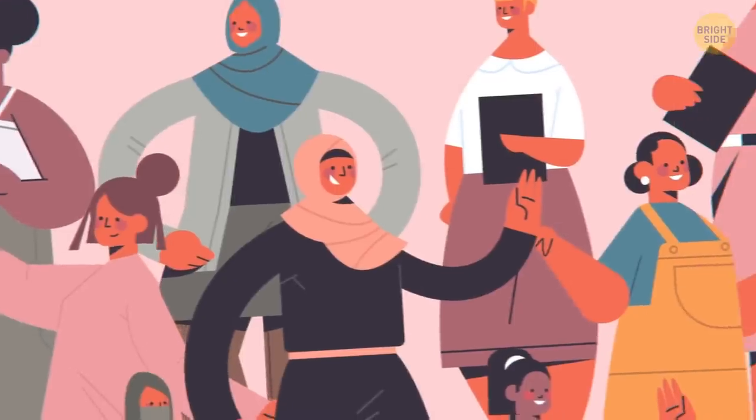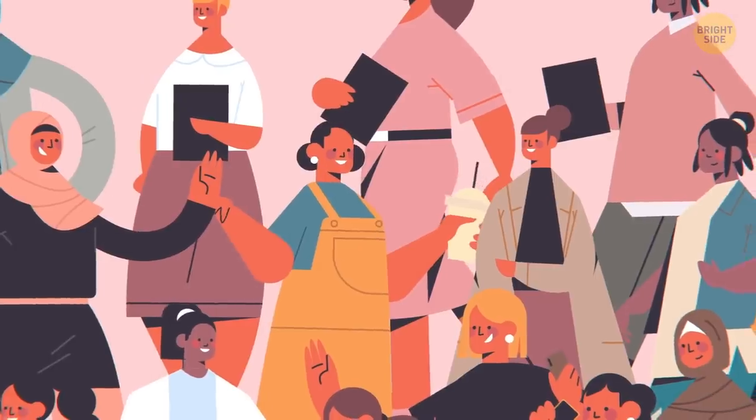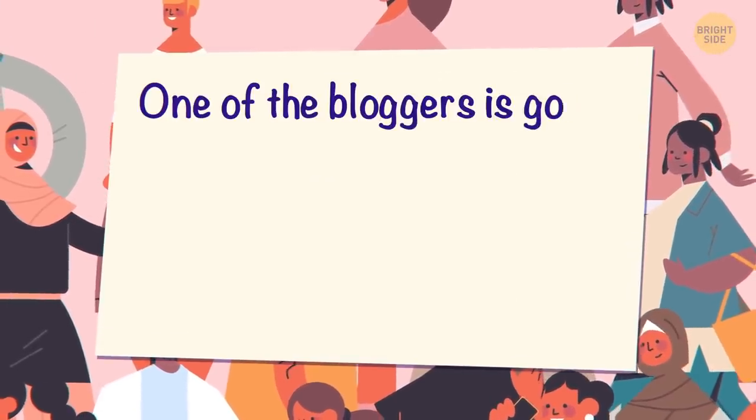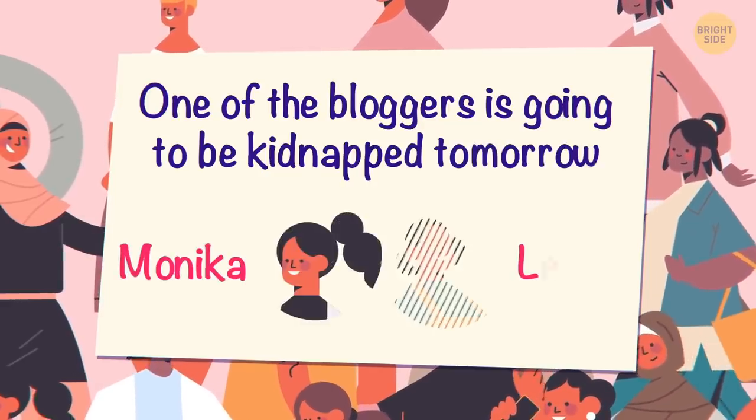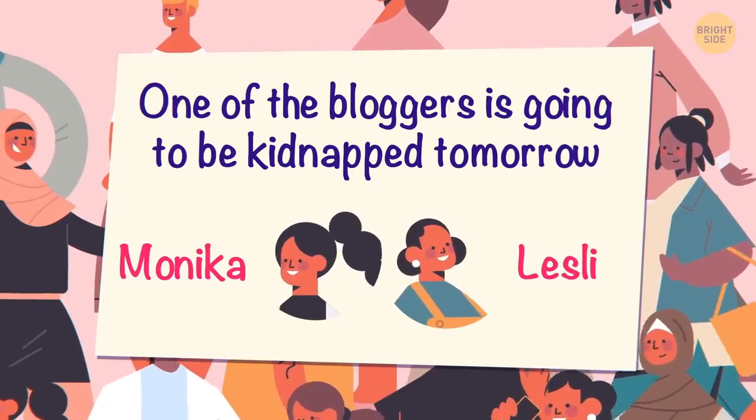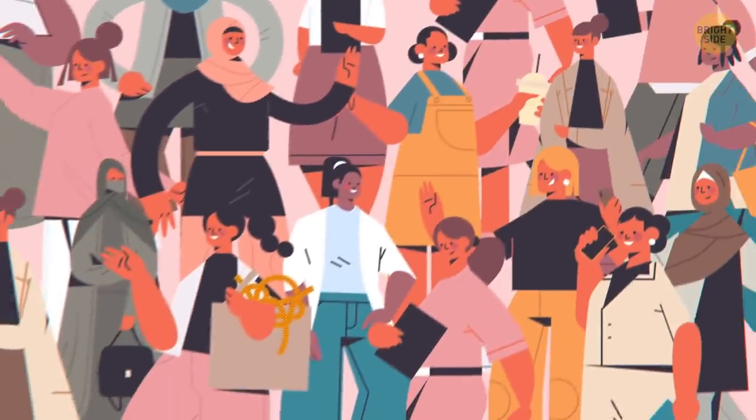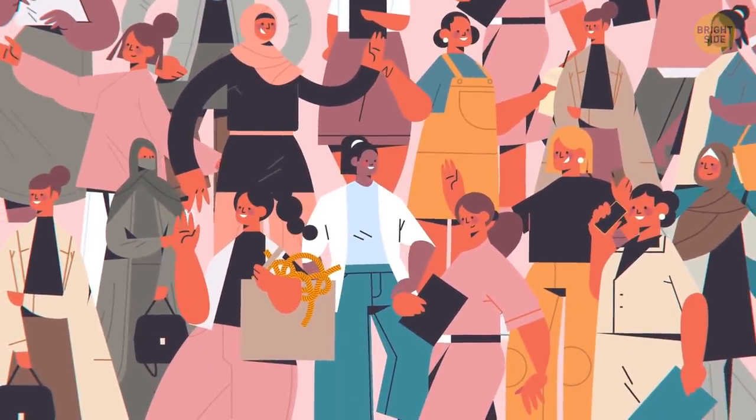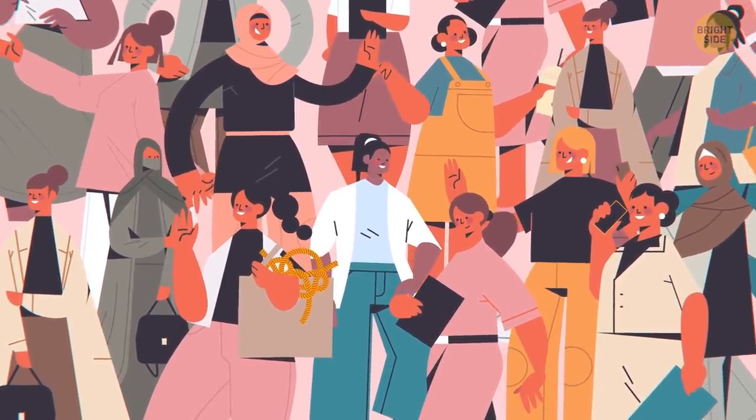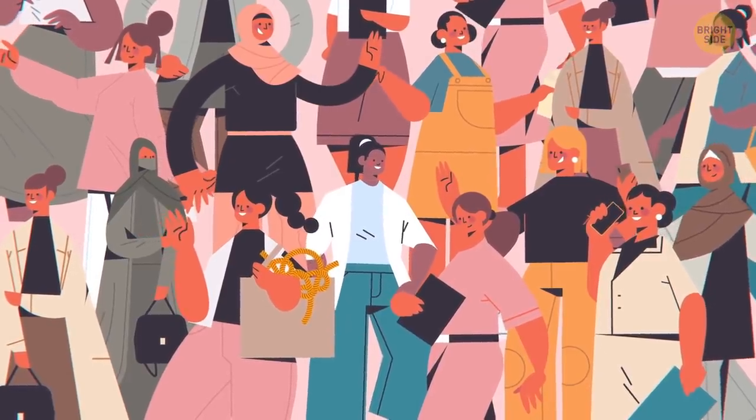One day, before a popular blogger conference, the security of the building where it was going to take place got a strange message. One of the bloggers is going to be kidnapped tomorrow. It'll either be Monica or Leslie. It was too late to cancel the whole thing. That's why the security officers decided to keep a close eye on the girls. During the event, the girls weren't talking to anyone suspicious. Everything and everyone looked perfectly normal. But suddenly, it became clear who was plotting against one of the girls. Can you figure it out?